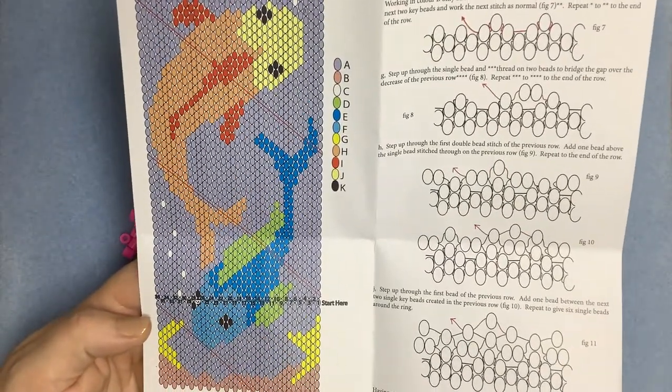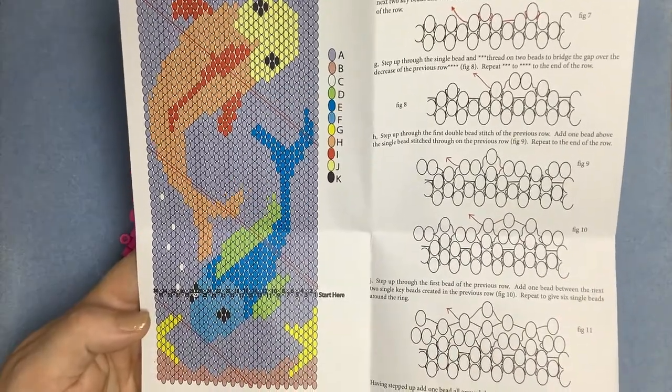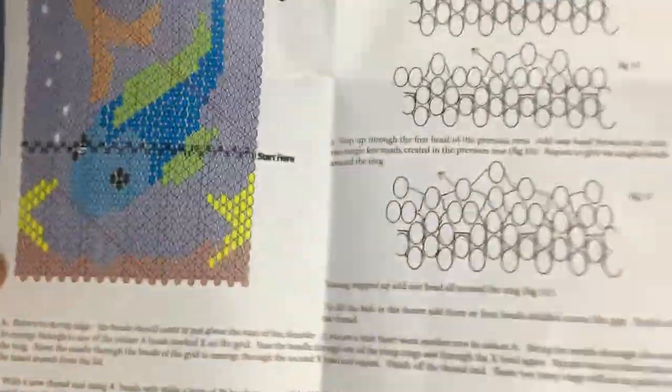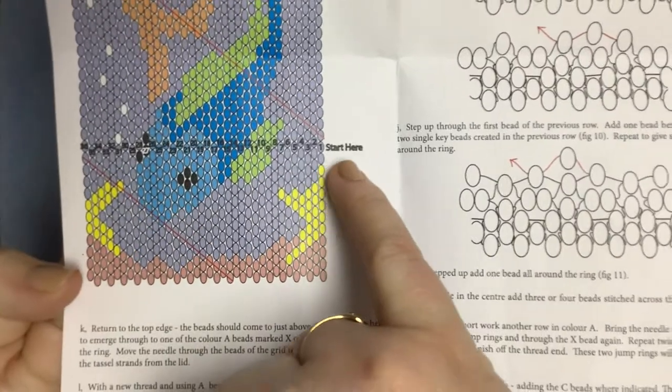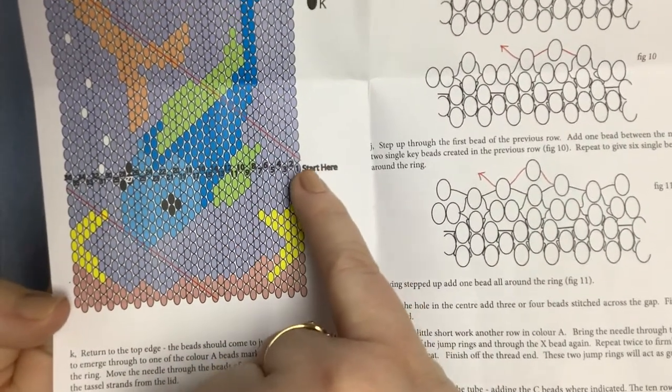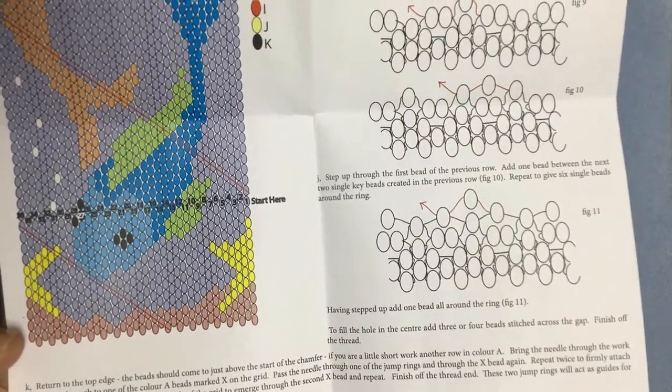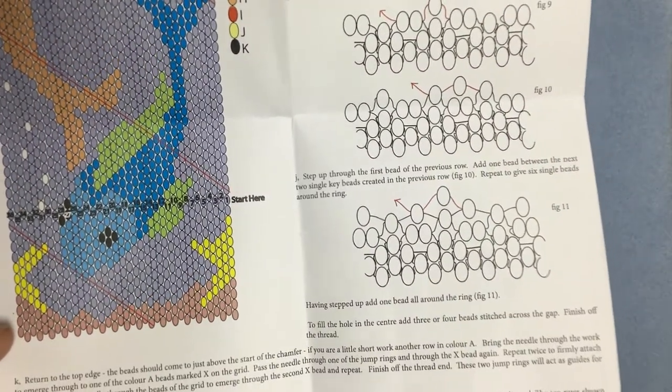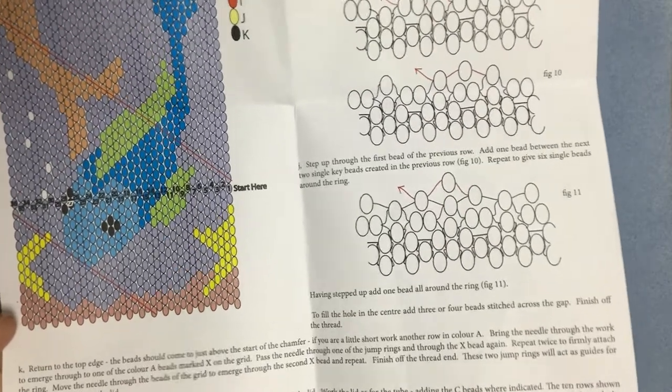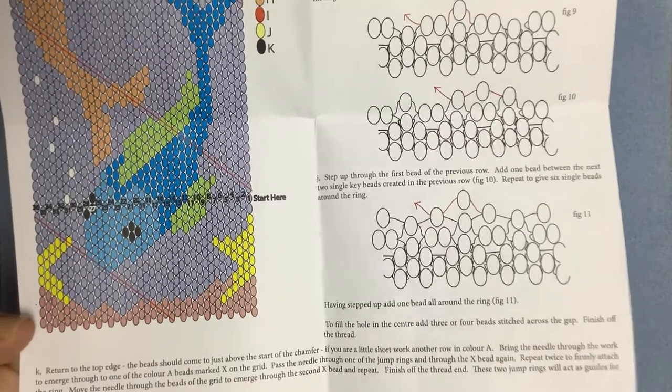This is a flat representation of a 3D tube. If you have a look, you can see just here we've marked on the first two rows of the grid. With peyote stitch, with tubular peyote stitch as with flat peyote, you pick up the first two rows of beads in one pass and then start embellishing on the third row.